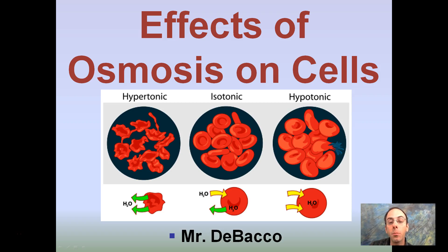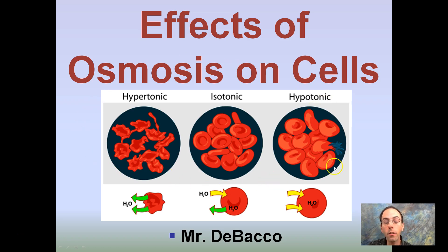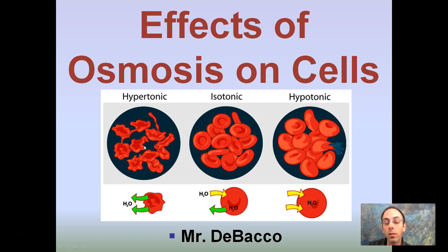Here we're going to look at the effects of osmosis on cells. Three important key terms you want to be familiar with are hypertonic, isotonic, and hypotonic, and how these relate, how they change the structure of cells, how some can lead to potential cell death, and some basically just not functioning properly. We'll look at each of these in detail.